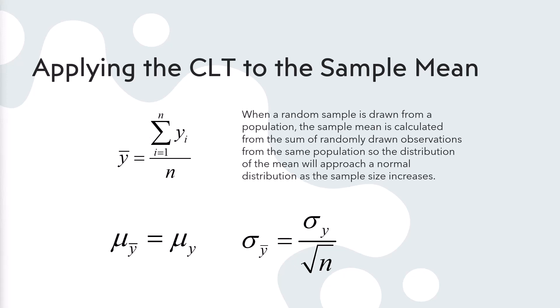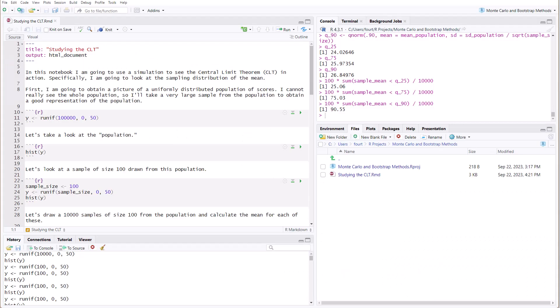We have all this information mathematically. We know the standard deviation gives us consistency, the mean of the means equals the population mean, and the distribution of those means is normal. All of this is known, so we're not doing a simulation to show something new — we're doing it to see how well simulations match what we already know. Let me go ahead and call up an R instance and an R notebook I've created called 'Studying the Central Limit Theorem.'